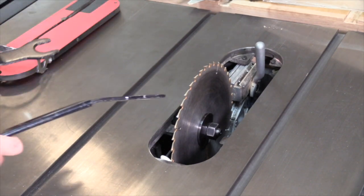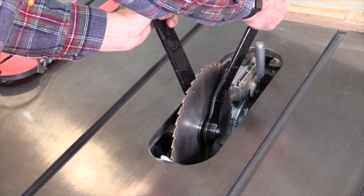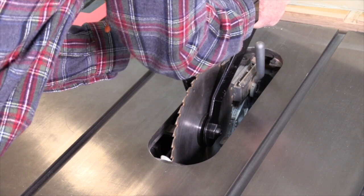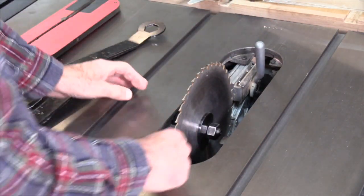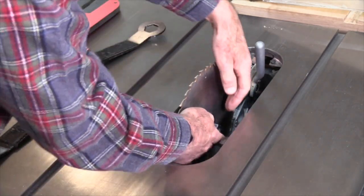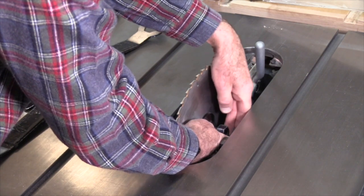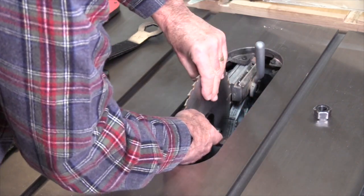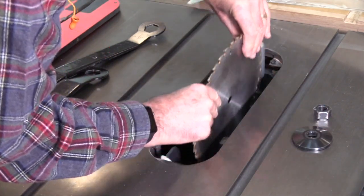Then to remove the blade, you use the two wrenches, one on the nut, the other on the arbor, and turn the nut counterclockwise. Here's the tricky part: take care not to drop the nut down into the innards of the saw. It's very difficult to retrieve. Pull off the tapered washer and the blade comes out.